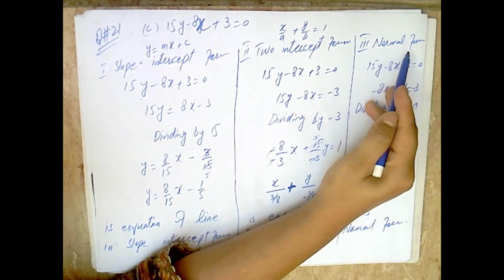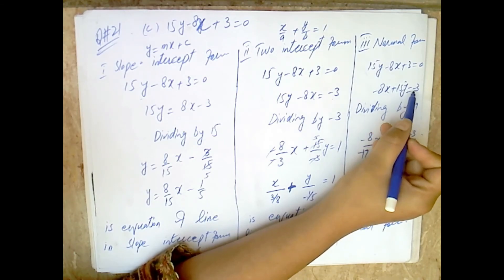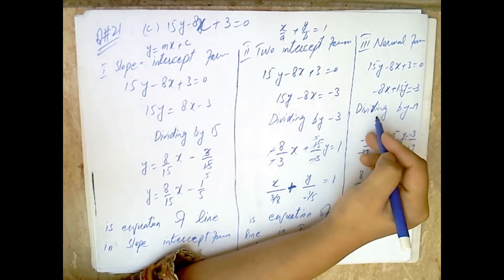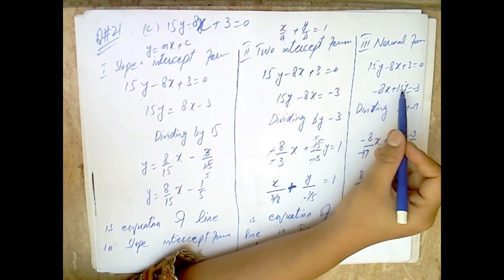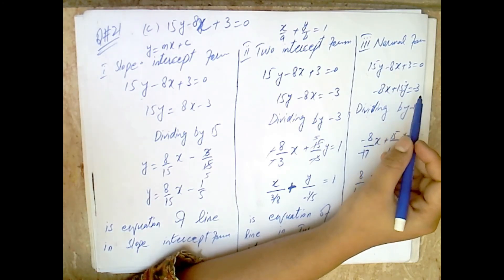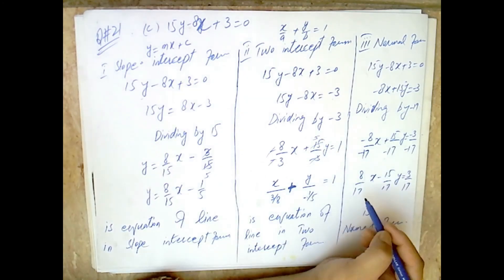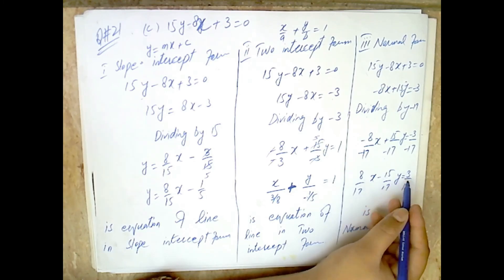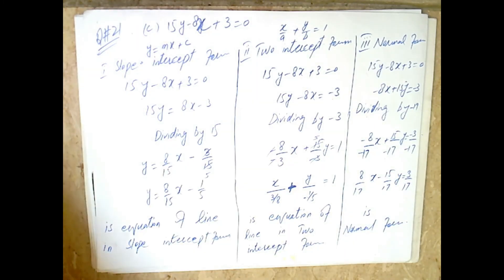Third, the normal form. From 15y minus 8x + 3 = 0, we write minus 8x + 15y = minus 3. Dividing by minus sqrt(8² + 15²) = minus sqrt(64 + 225) = minus 17, we obtain the normal form. The length of perpendicular from (0,0) is 3/17. This completes Exercise 4.3 Question 21 of 2nd Year Math Chapter 4, Introduction to Analytic Geometry.